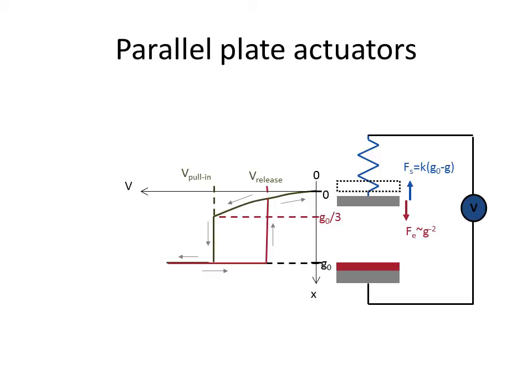So I see that I have a hysteresis curve. In the blue this is the closing voltage with a pull-in voltage and in the red is the opening voltage and you have a release voltage.